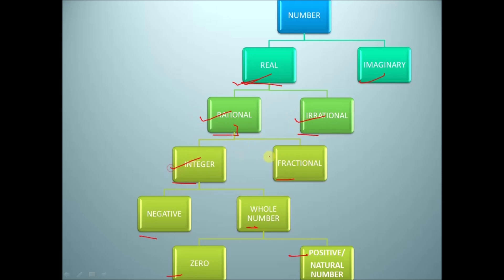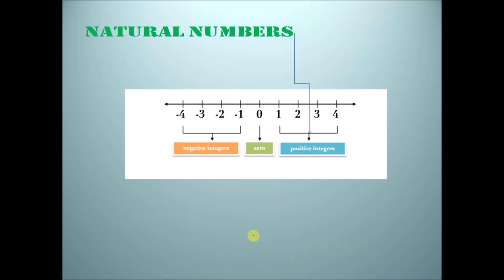Rationals are divided into integers and fractional. Then integers can be negative or whole numbers. Whole numbers are 0 and positive natural numbers. So first of all, let's start with natural numbers.